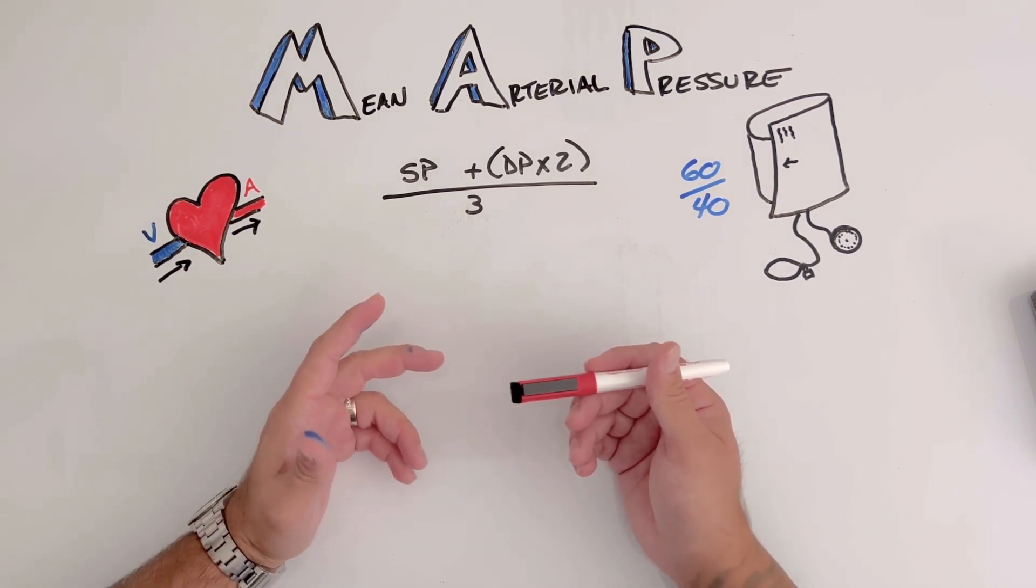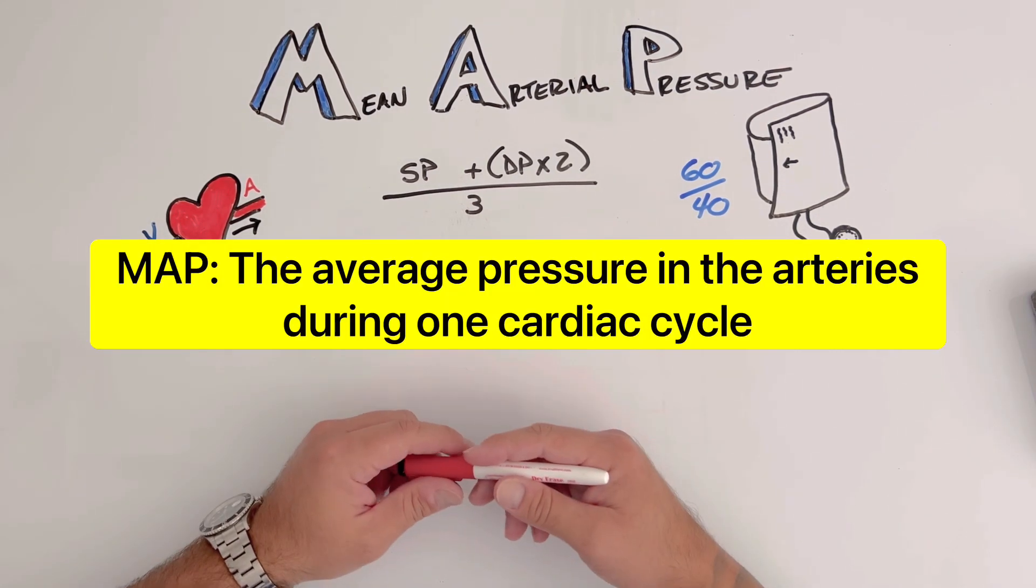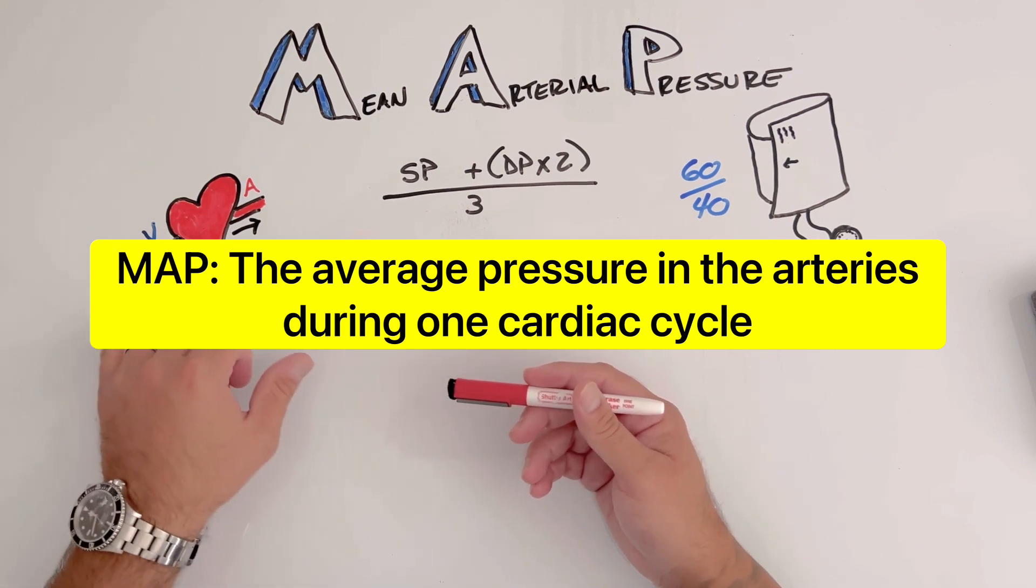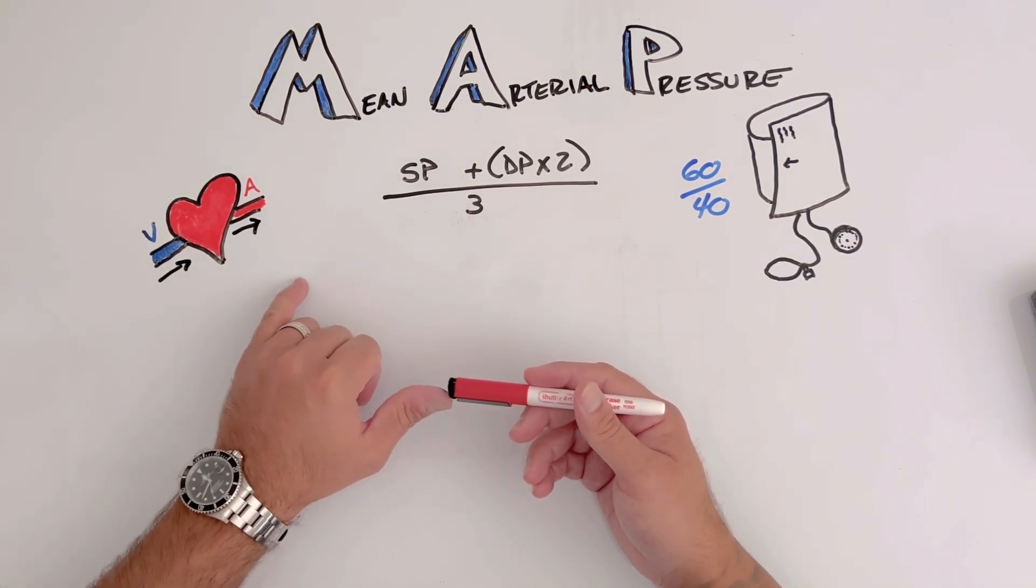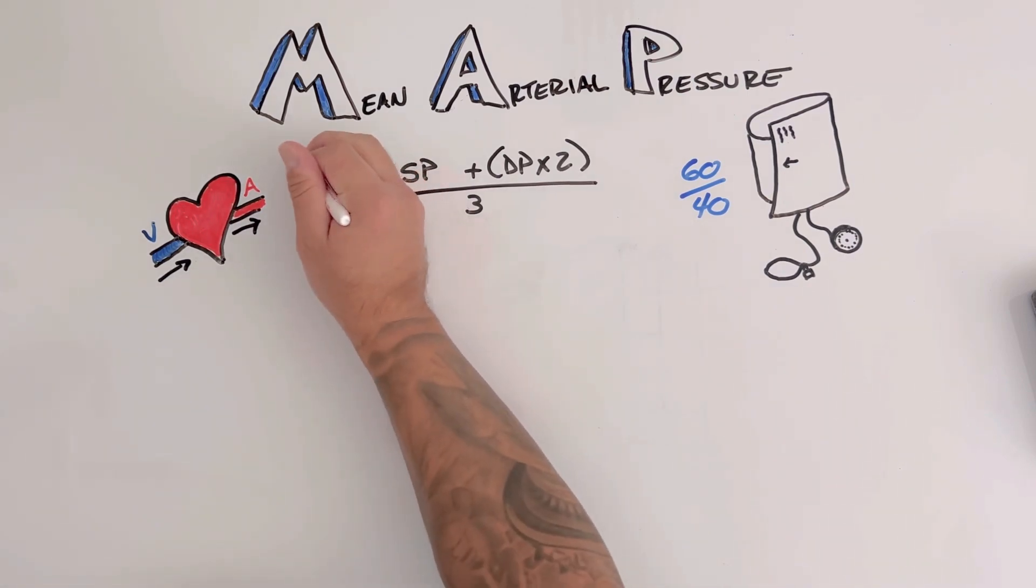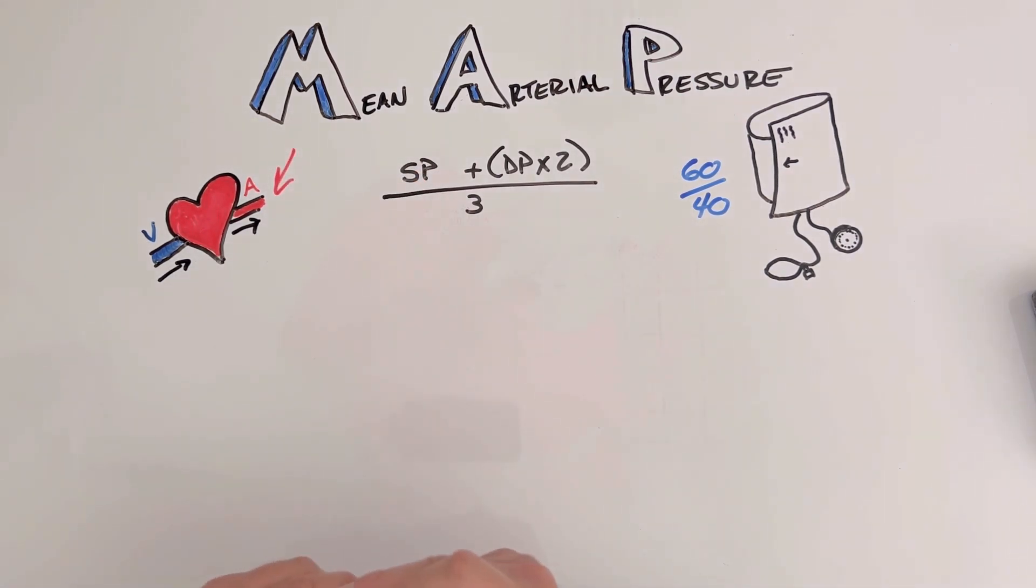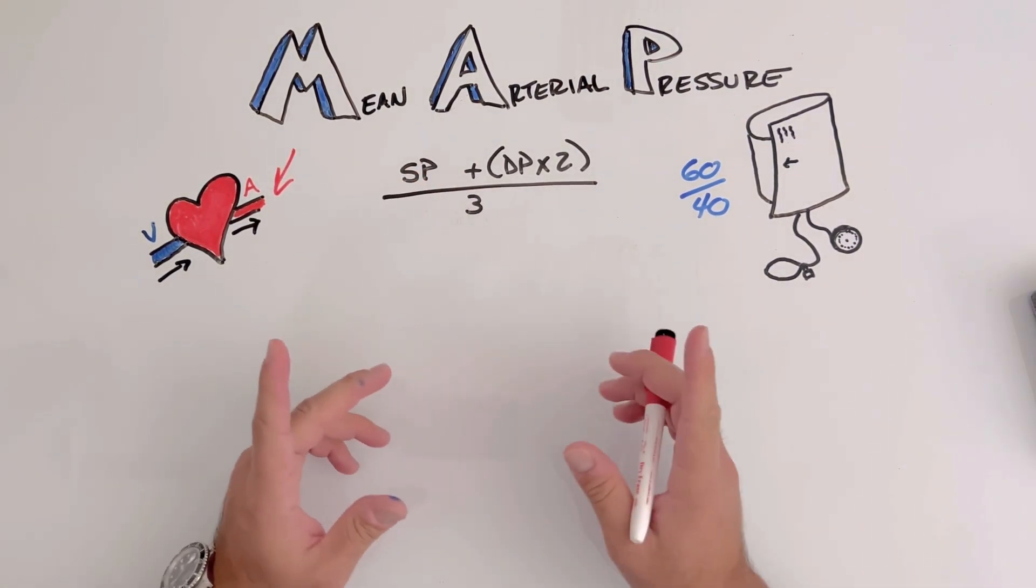So what is MAP? MAP is the average pressure in the arteries during one cardiac cycle. You know that veins go to the heart and arteries are going away from the heart. So this is specifically where we're looking at the pressure on the arteries being forced on the outgoing side.